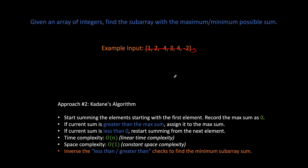Invert the less-than and greater-than checks to find the minimum subarray sum. This algorithm as described finds the maximum sum — just reverse the comparisons, making greater-than become less-than and less-than become greater-than, and you'll end up with the minimum subarray sum.